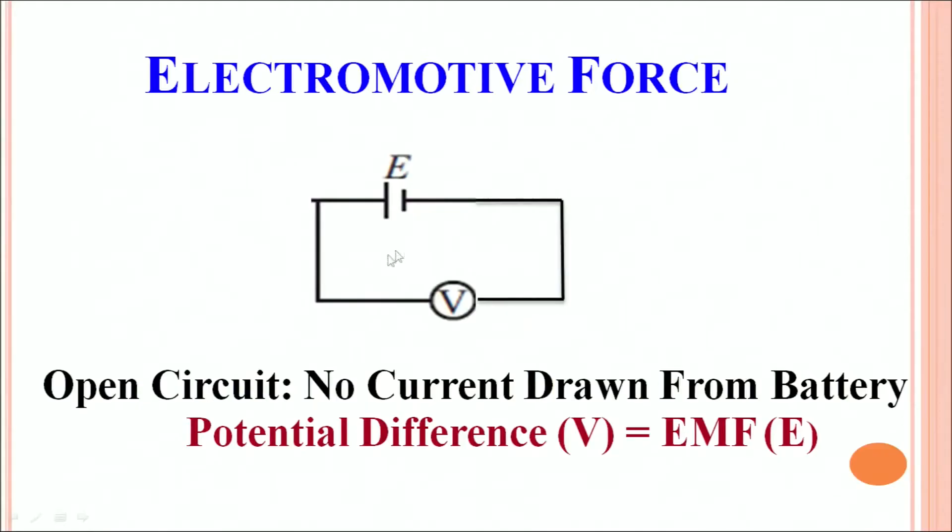If you connect a battery and connect a high resistance voltmeter across it so that there is no current flowing in the circuit, if the resistance of the voltmeter is high, which generally it is high, it will not be able to draw any current. Therefore, there will be no flow of current internally also through the battery. This type of configuration is called open circuit in which no current is drawn from the battery.